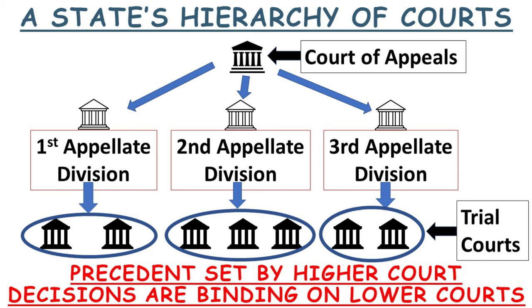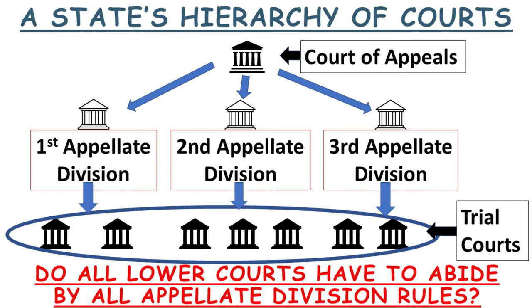If your judge is under the first appellate division, do they have to abide by case law from the third division? In some states, middle appellate court rulings only bind lower courts in their own jurisdiction. In other states, any middle appellate court rulings bind all lower courts. Figure this out for your state so you know which appellate court cases to focus on for your research.